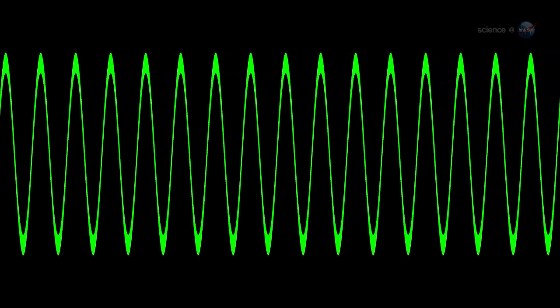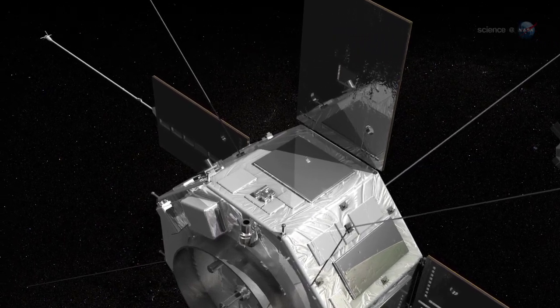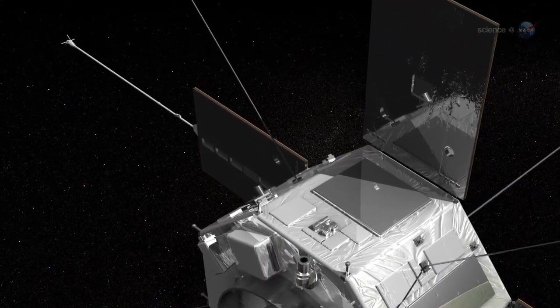He's careful to point out that these are not acoustic waves of the kind that travel through the air of our planet. Chorus is made of radio waves that oscillate at acoustic frequencies between 0 and 10 kHz. The long antennas of the radiation belt storm probes are perfect for detecting these kinds of waves.